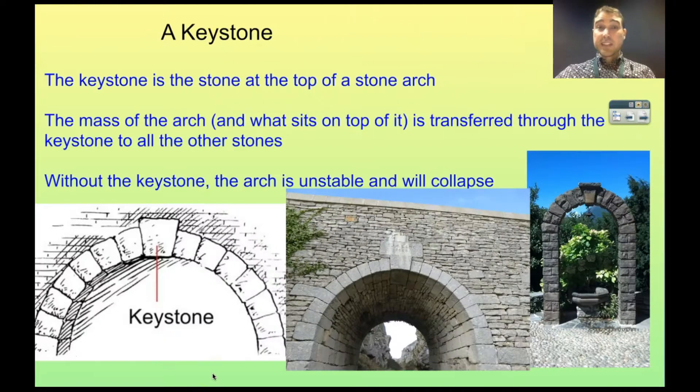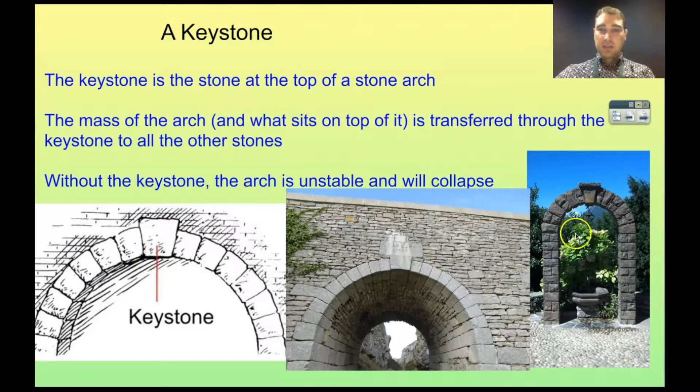So what is a Keystone? A Keystone is the stone that's at the top of a stone arch, or a masonry arch. So here we can see a Keystone here, a Keystone here, and a Keystone here.